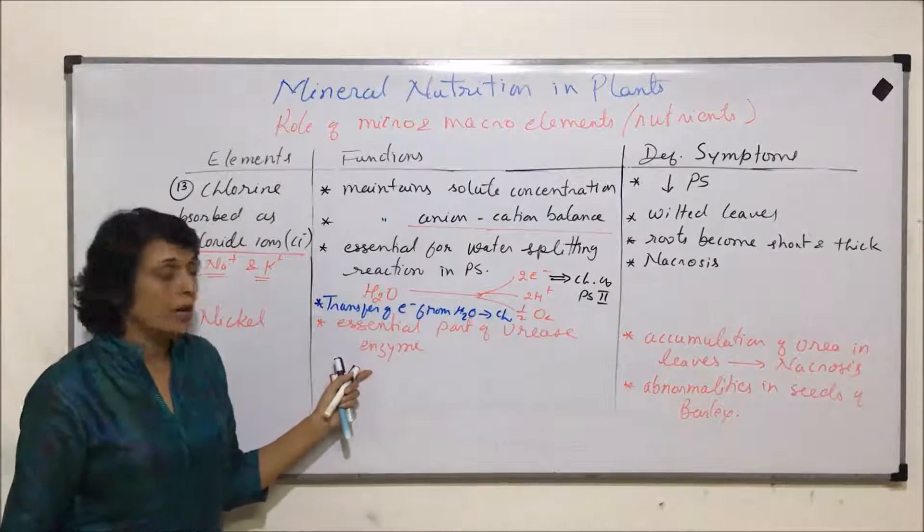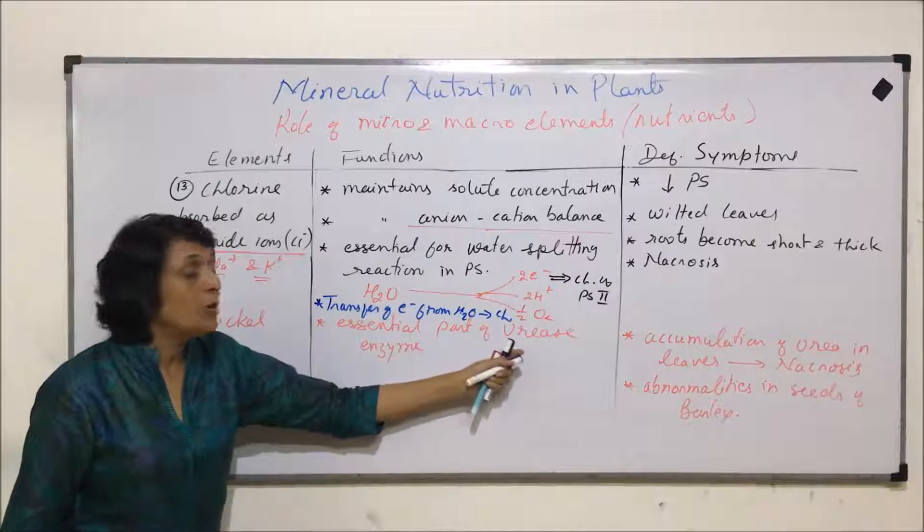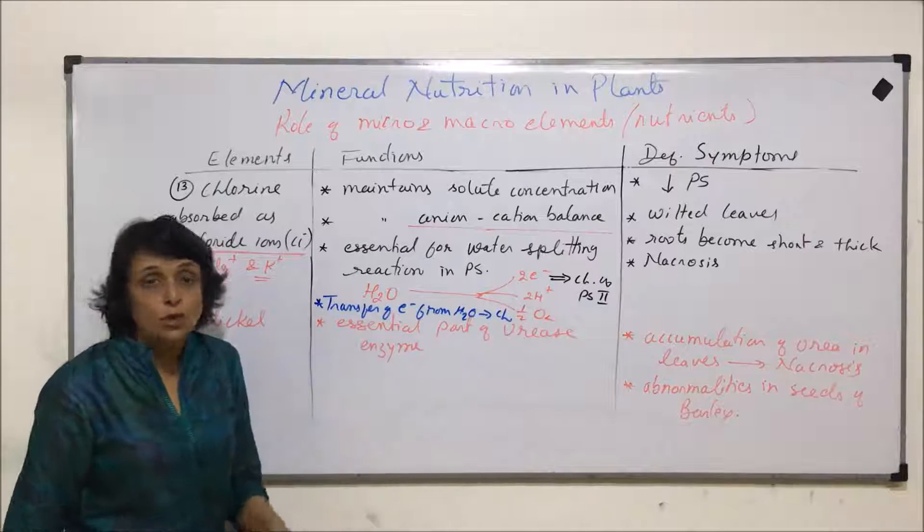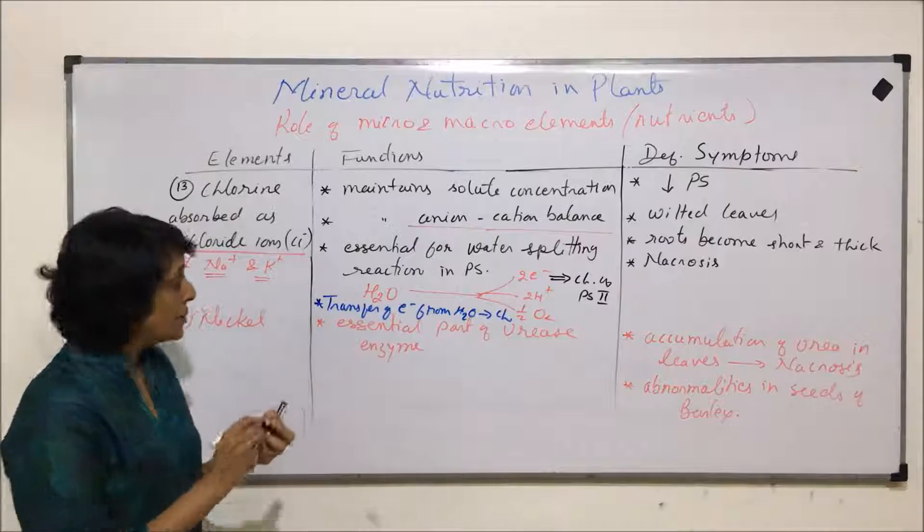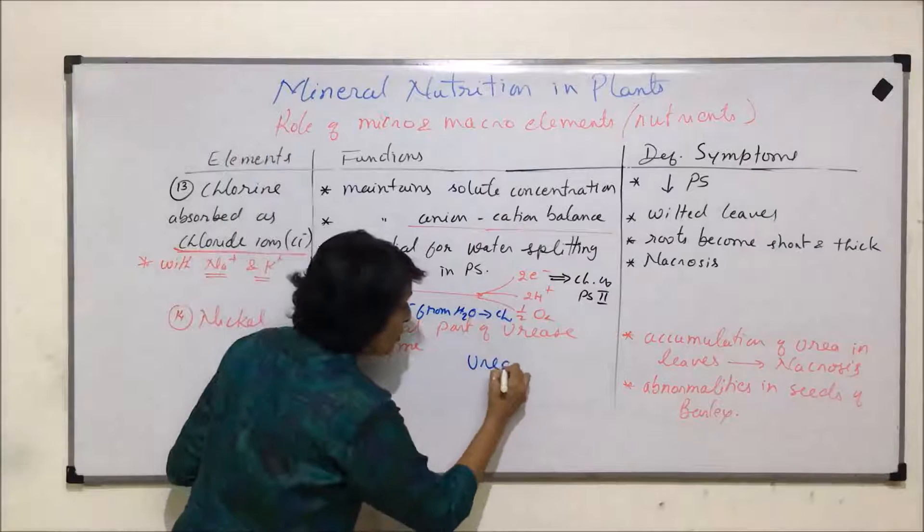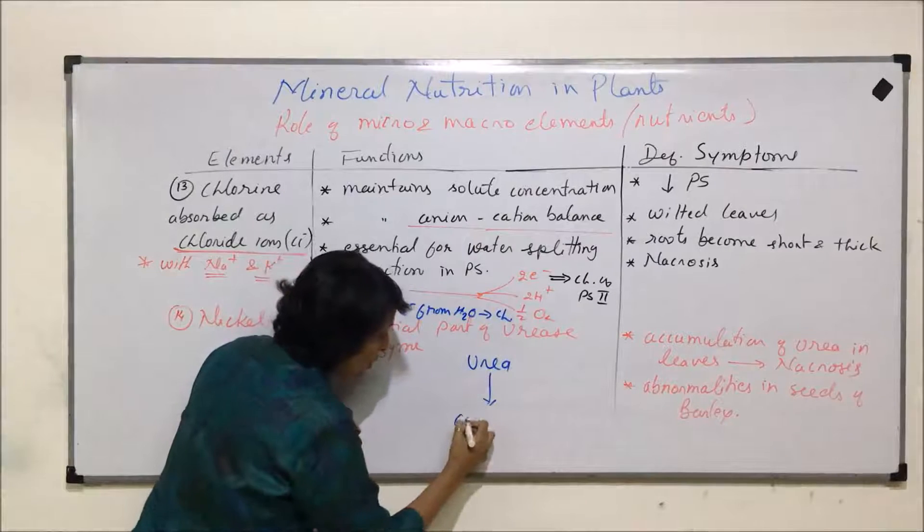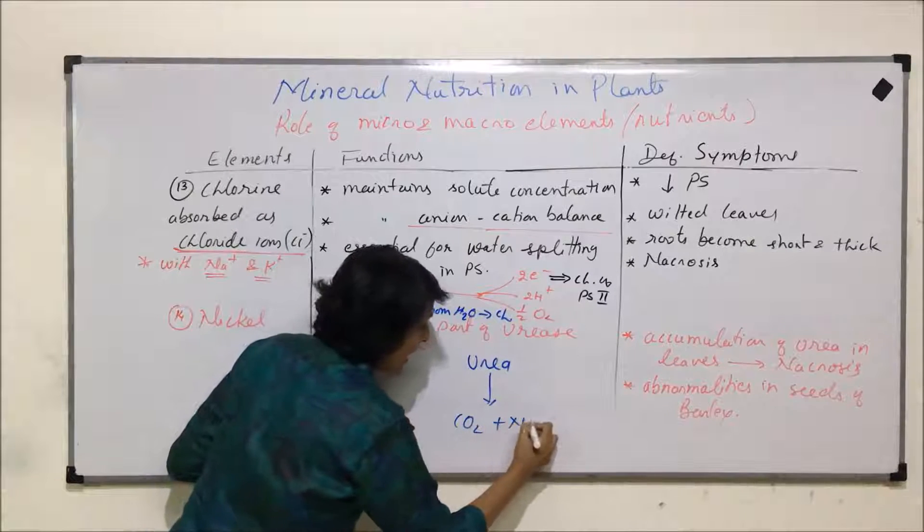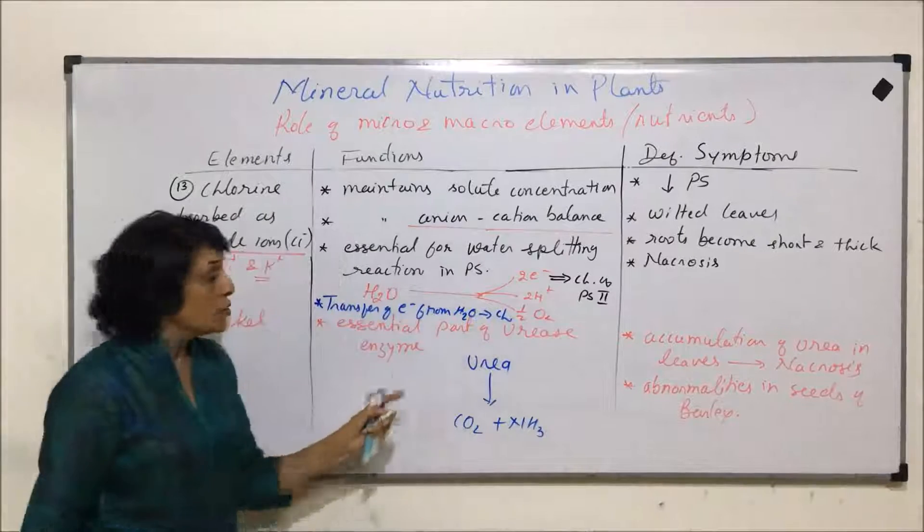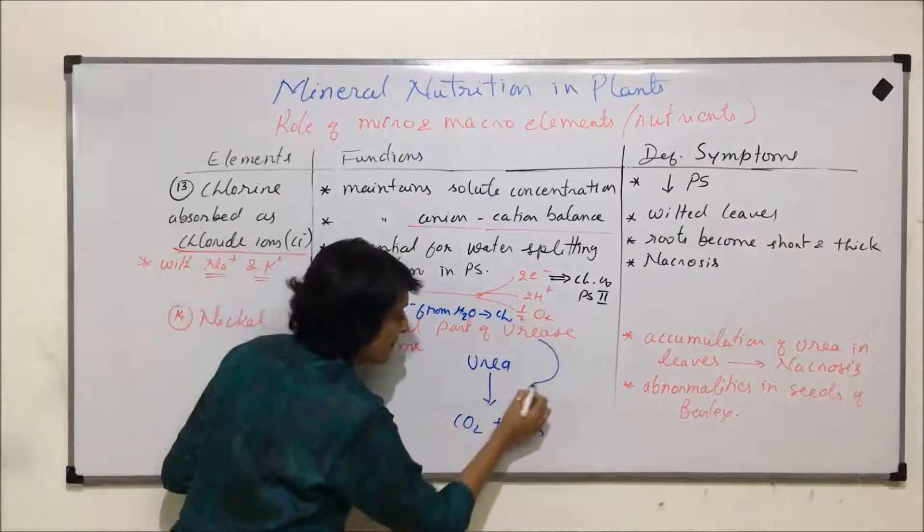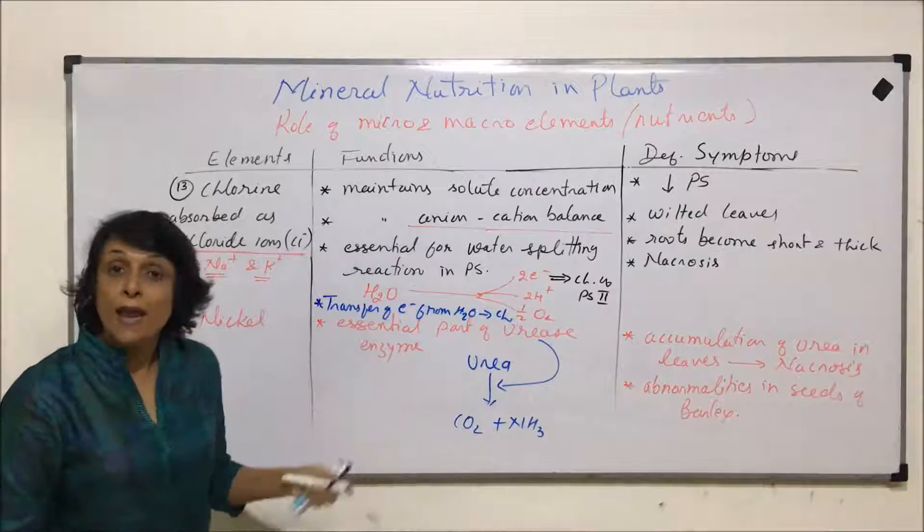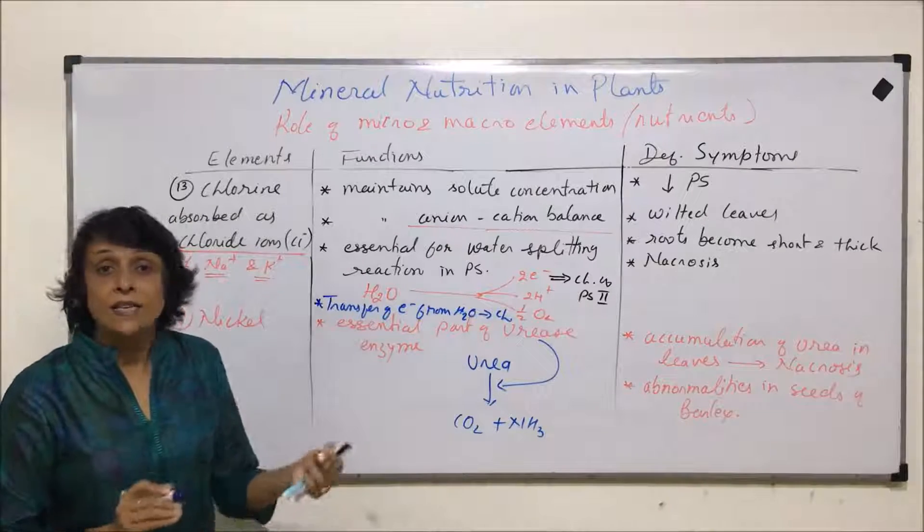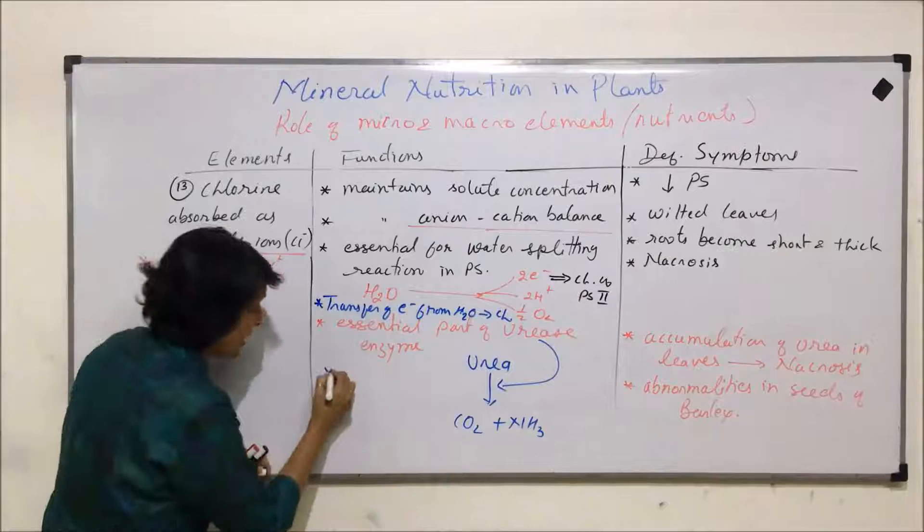It is also essential for urease enzyme formation. Urease enzyme helps in breakdown of urea into carbon dioxide and ammonia. This urease enzyme is going to help in this reaction. In plants, urea synthesis takes place in almost all cells.